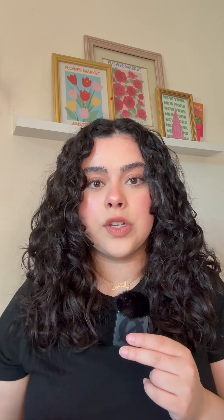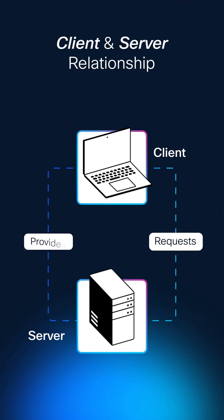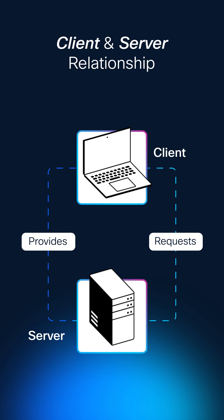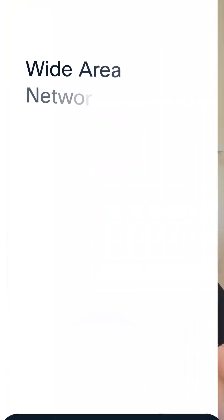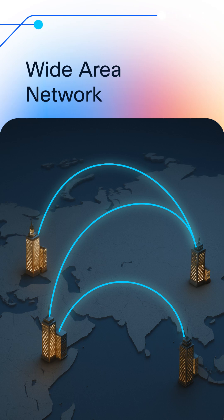Think of a network like a digital conversation between devices. Inside that network, there are devices that play one of two roles: you've got clients that ask for things, like your phone or your laptop, and then you have servers that provide them with answers, like a website or your printer. Sometimes these devices are in the same room or building — that would be called a local area network, or LAN. When devices are spread across multiple buildings or even countries, we call that a wide area network, just like the internet.